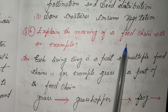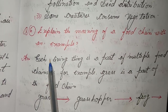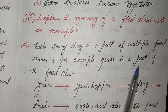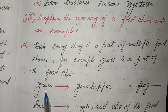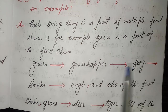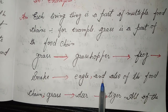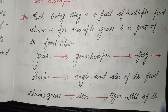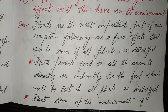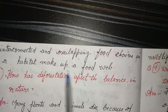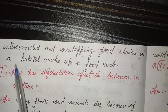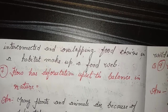Six: Explain the meaning of a food chain with an example. Each living thing is a part of multiple food chains. For example, grass is part of the food chain: grass, grasshopper, frog, snake, eagle. And also of the food chain: grass, deer, tiger. All the interconnected and overlapping food chains in our habitat make up the food web.